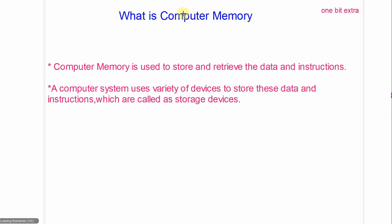Let's see what is computer memory. Computer memory is used to store and retrieve the data and instructions. We give the computer data and instructions, and for these the computer uses memory. Memory is not only used to store data and instructions, but when we want to access that data and instructions, it also uses computer memory.